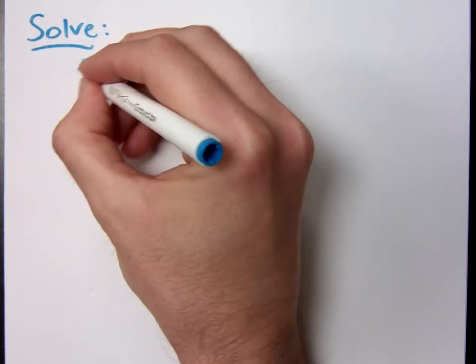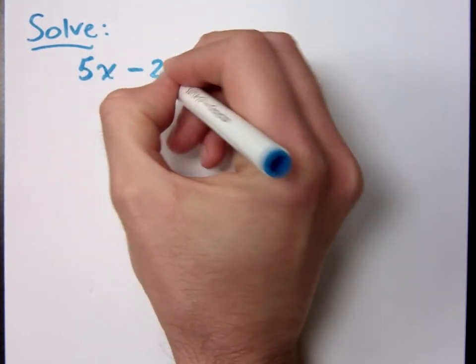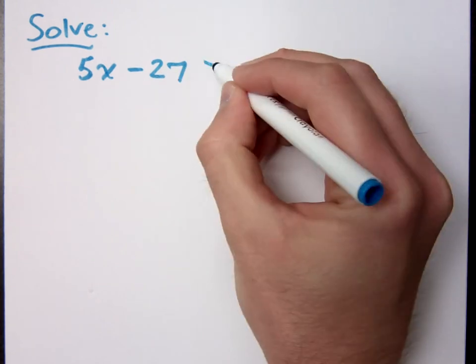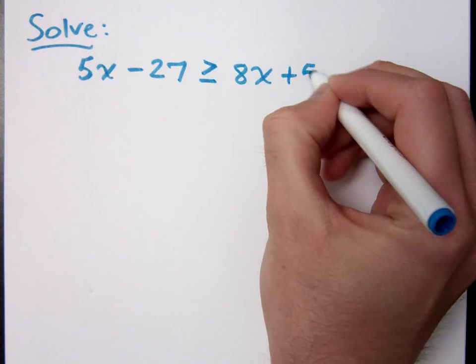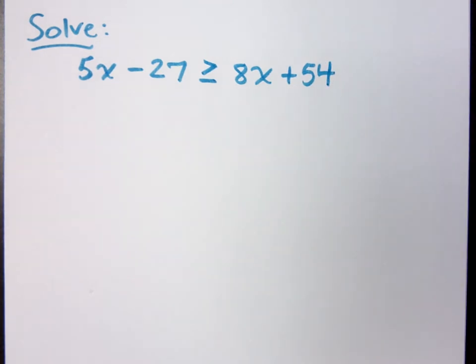If I ask you to solve 5x minus 27 is greater than or equal to 8x plus 54, how do you solve this?